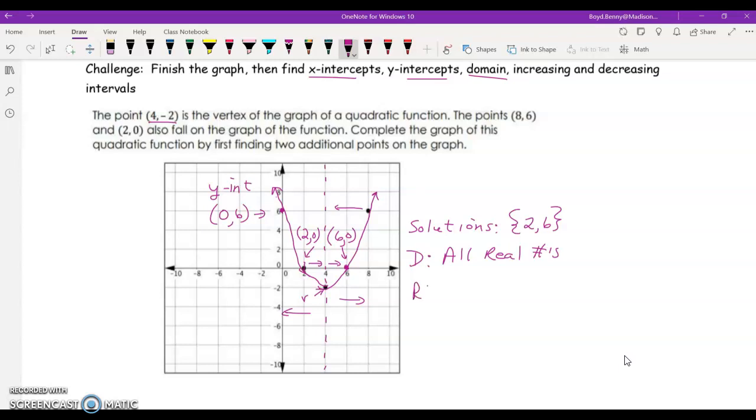How about the range? So, the range, the lowest point is negative 2. So, we would say that it's the set of y's such that y is greater than or equal to negative 2.